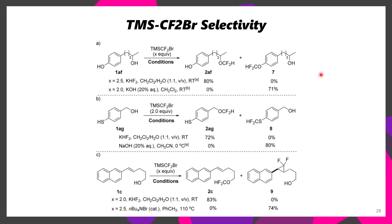Additionally, it's possible to get regioselective functionalization. In this case, they were able to selectively functionalize the aliphatic alcohol using KHF2. However, when they switched to KOH, they selectively functionalized the phenol. In this other case, the same thing occurred but instead of functionalizing the phenol, they functionalized a thiol. Finally, when tetrabutylammonium bromide and toluene were used at 110 degrees Celsius, we instead get reactivity at the alkene, forming a gem-difluorocyclopropane, showing that regioselective functionalization can be easily achieved using this one reagent as long as you know what conditions to use.